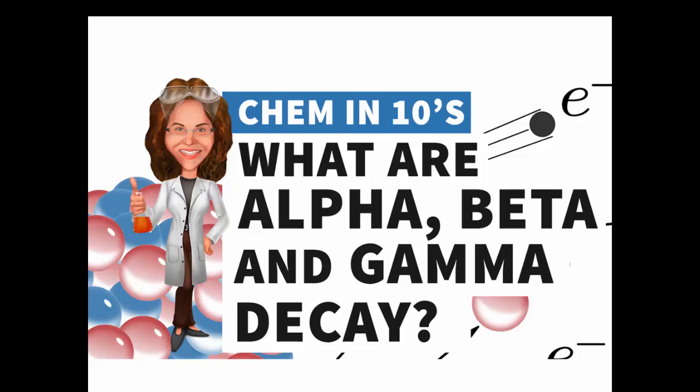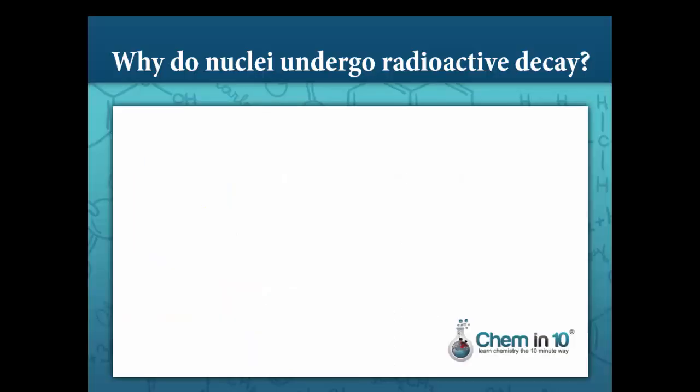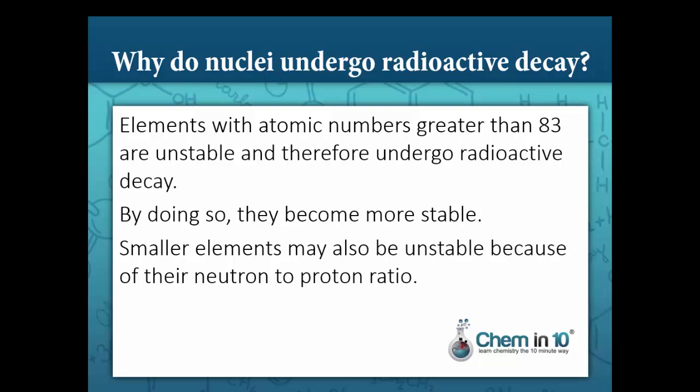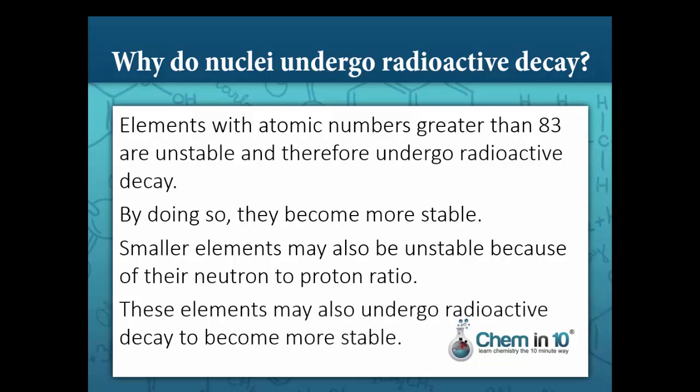In this video, we are going to learn about alpha, beta, and gamma decay. We will learn what alpha and beta particles are and how to write out alpha and beta nuclear equations. Recall that elements with atomic numbers greater than 83 are unstable and therefore undergo radioactive decay to become more stable. In addition, smaller elements may also be unstable because of their neutron to proton ratio, and may also undergo radioactive decay to become more stable.